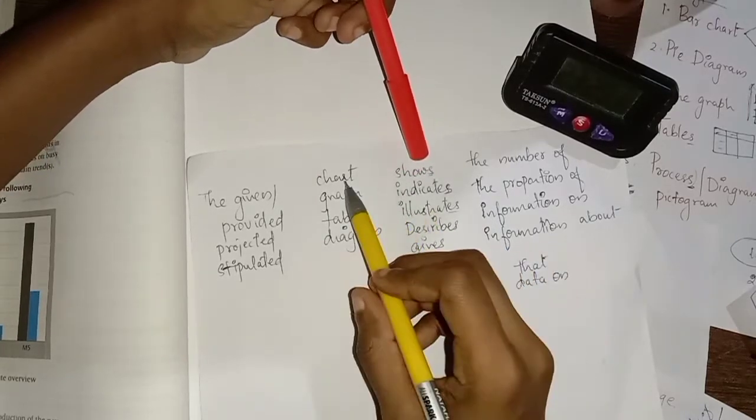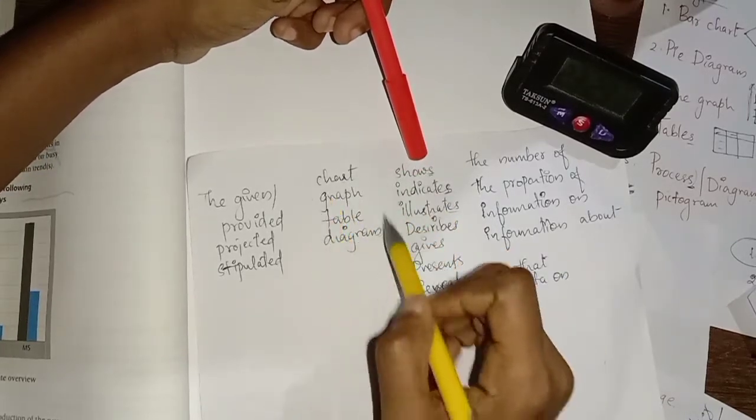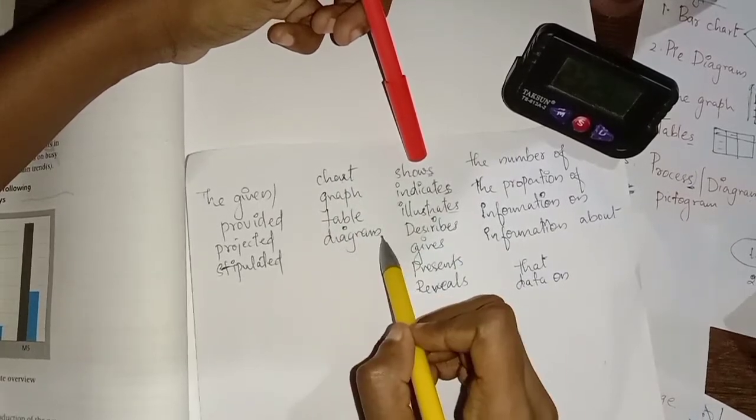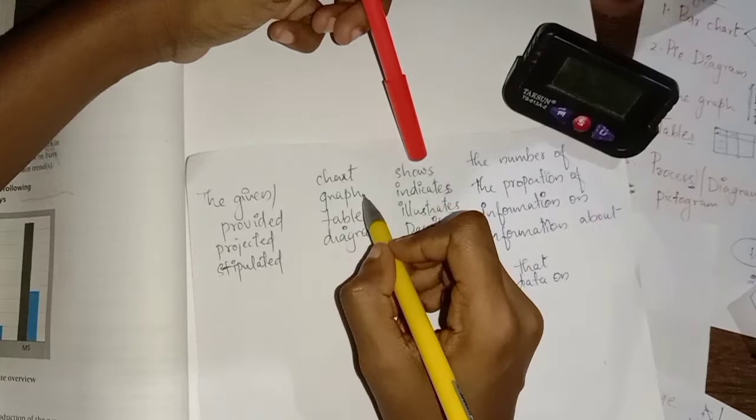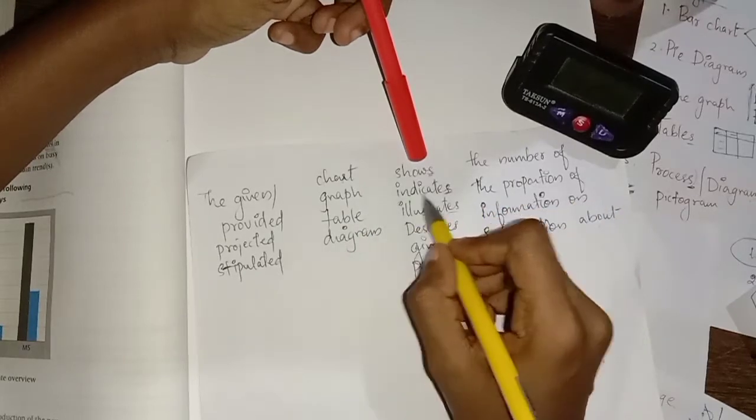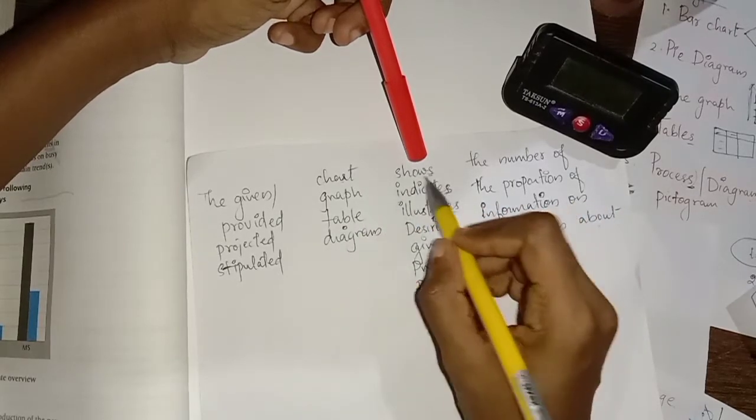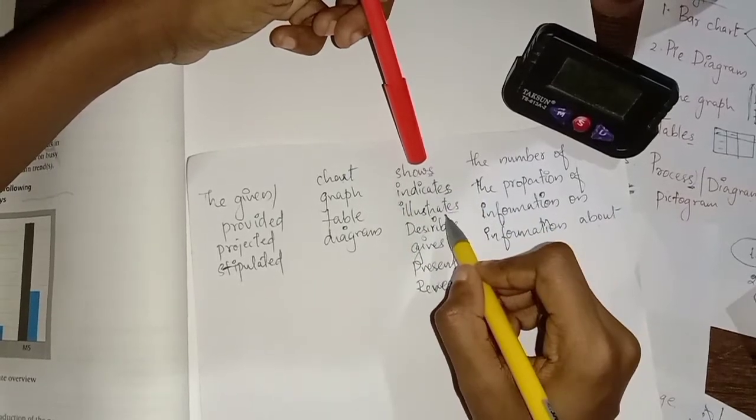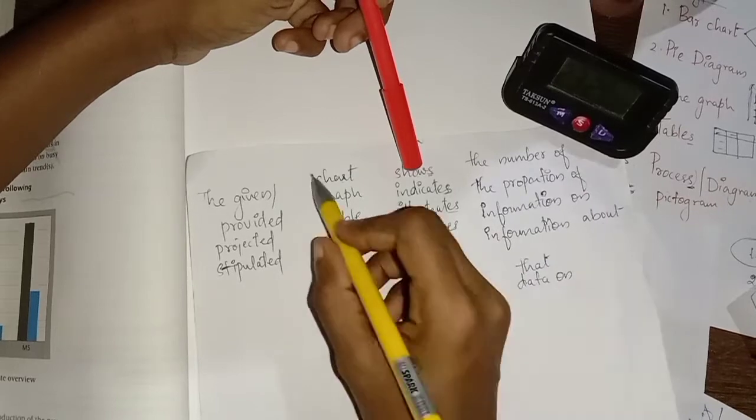The chart shows - because I've mentioned all in singular: chart, graph, table, diagram. If it's charts or if it's graphs, then it's going to change. Graphs indicate, or charts show, tables illustrate. That's all. This is singular, that's why I used shows.